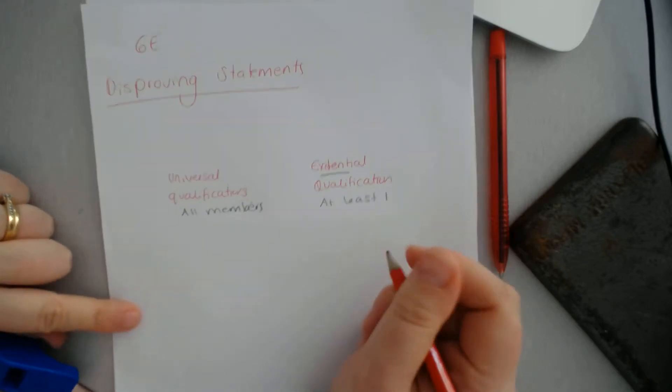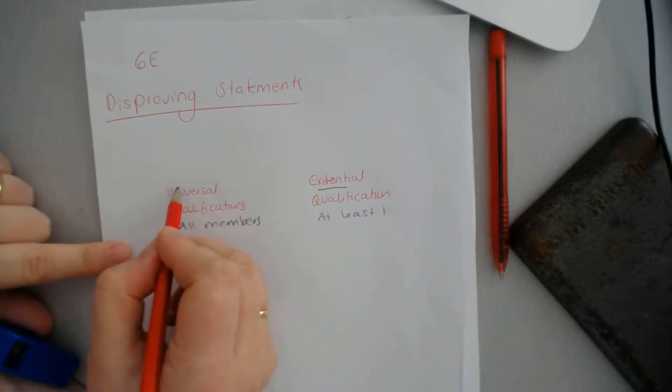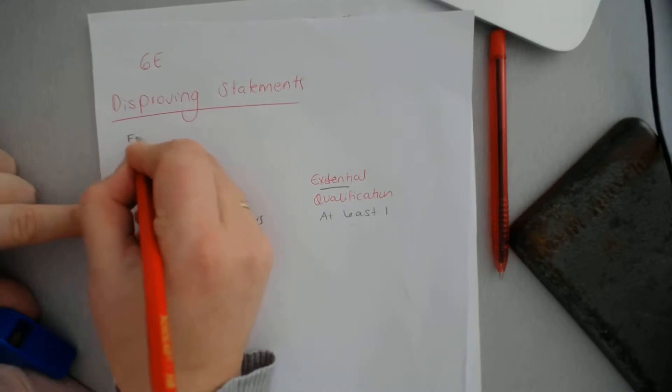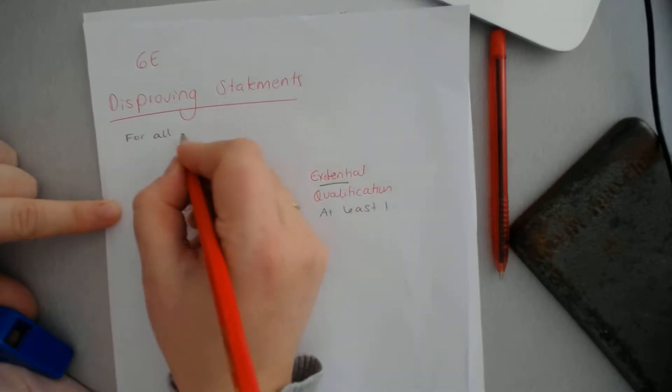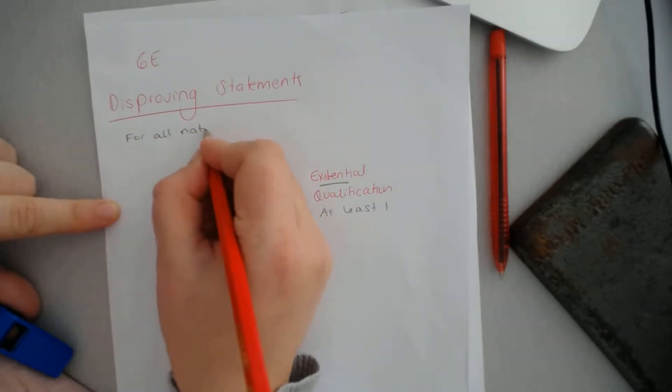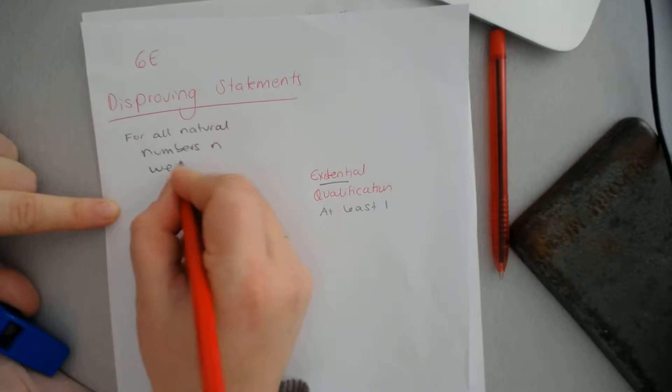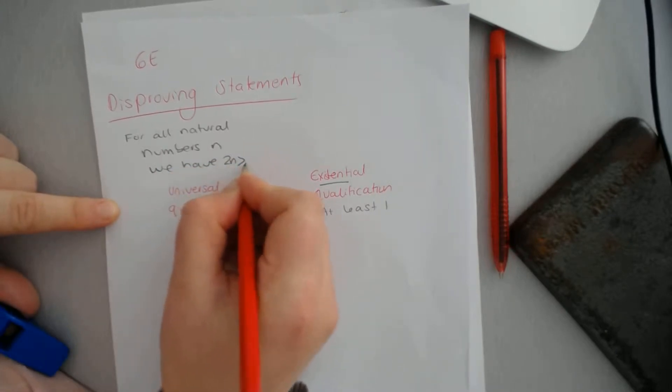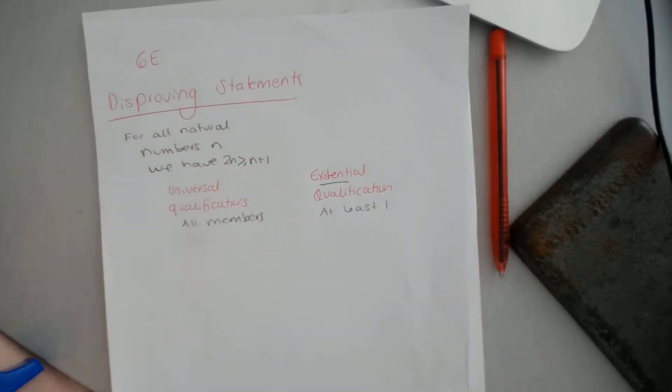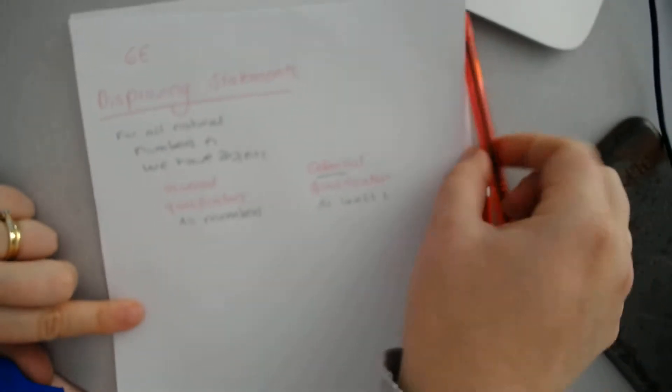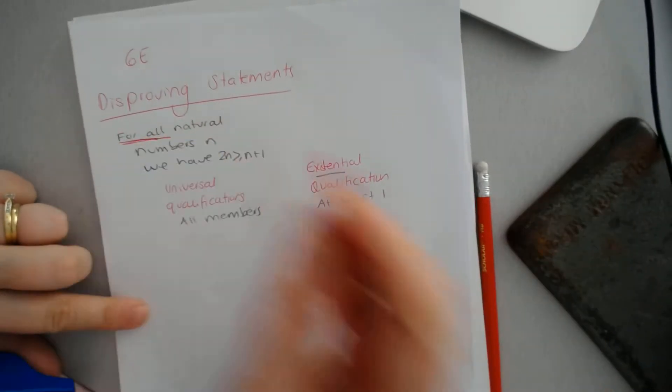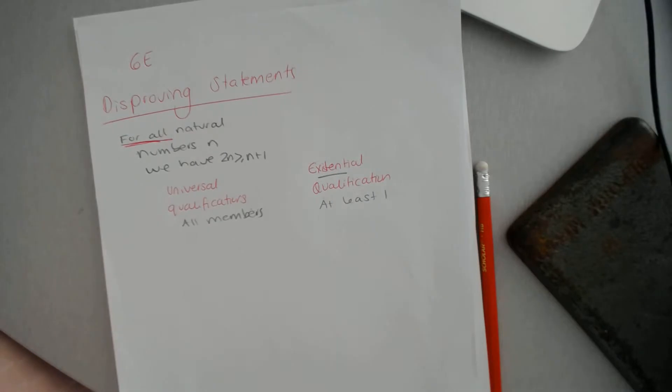A statement which is a universal qualifier, you might see, for example, for all natural numbers n, we have 2n greater than or equal to n plus 1. Now this one's from your textbook. So the key that's a universal qualifier is this for all part. It means it applies to everything in the set.